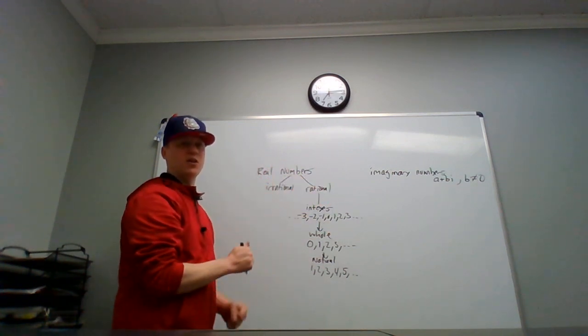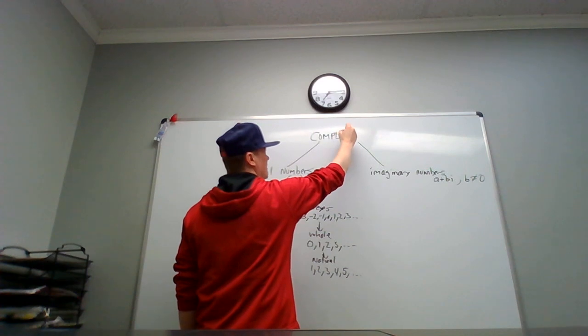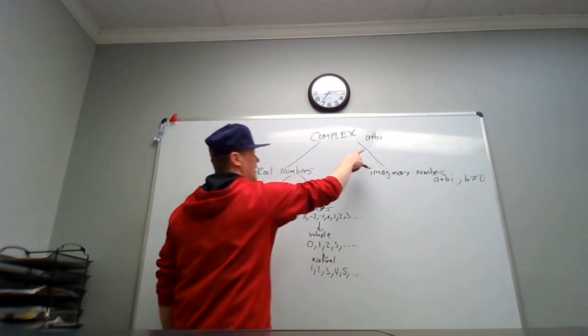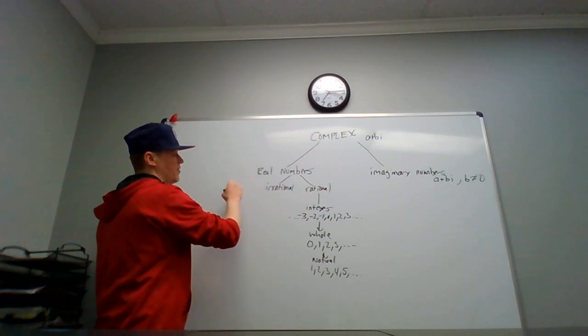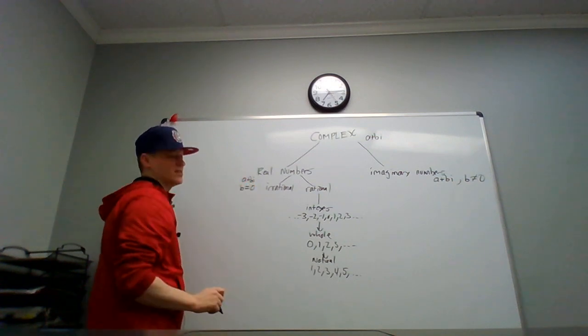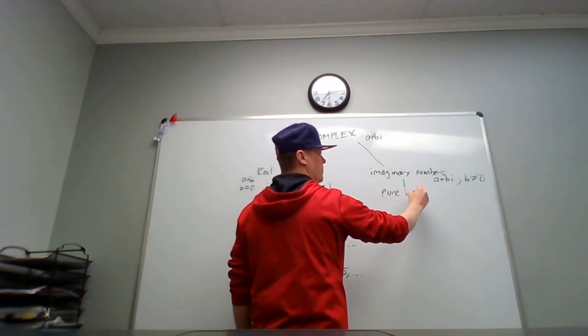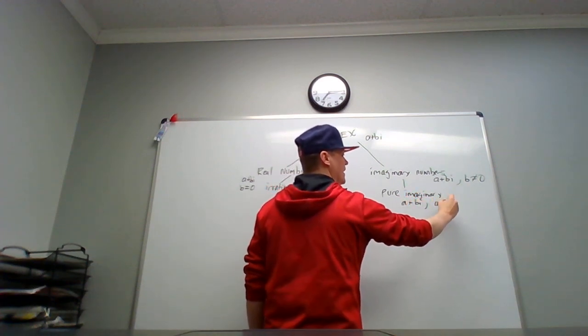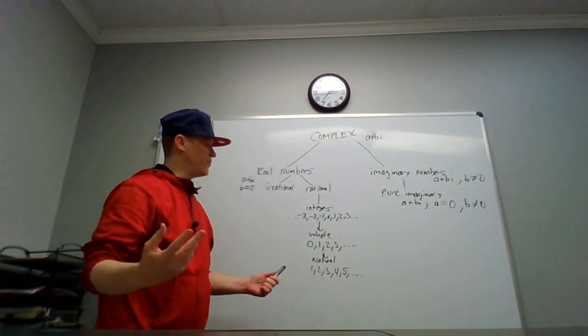And both of these are part of a bigger set called the complex numbers. So the complex numbers are also a + bi, but in these ones b can be zero, whereas in imaginary numbers they cannot. The real numbers are a + bi as well, incidentally, but b does equal zero in this case. Imaginary numbers has a further classification of pure imaginary numbers. These are a + bi where a is equal to zero and b does not equal zero.